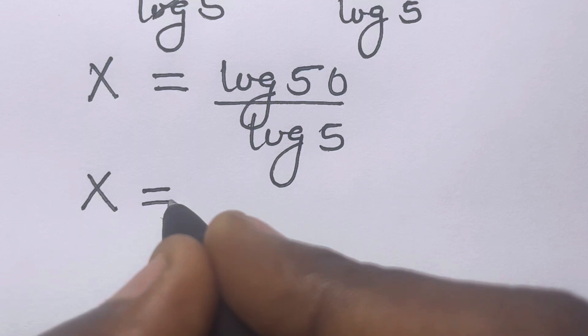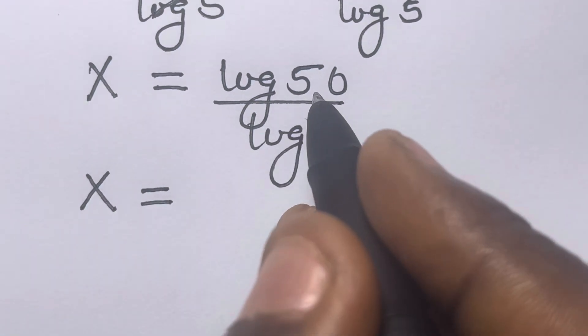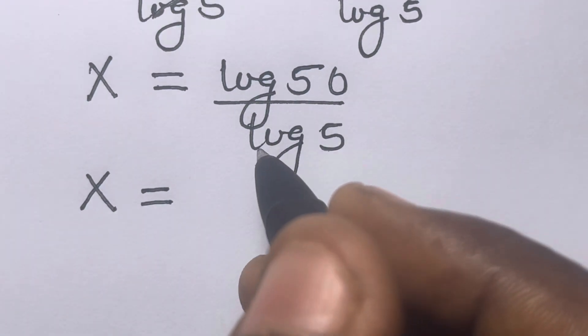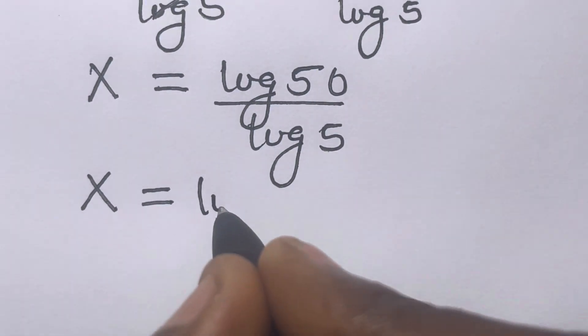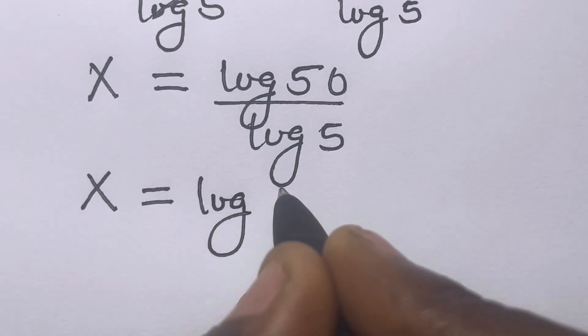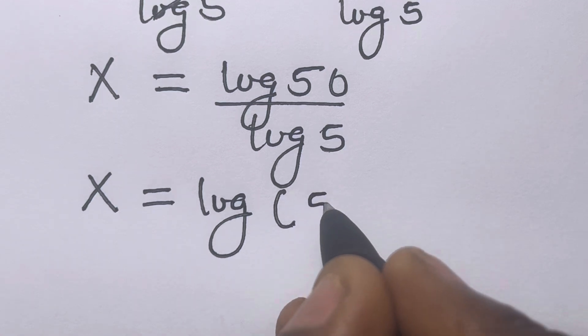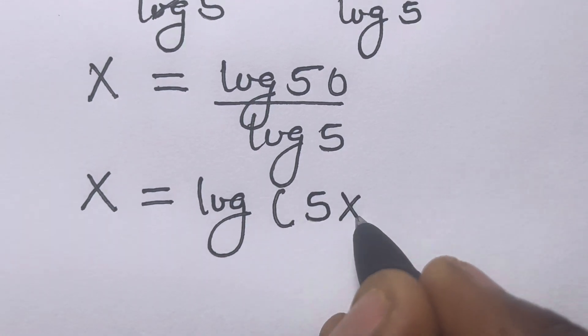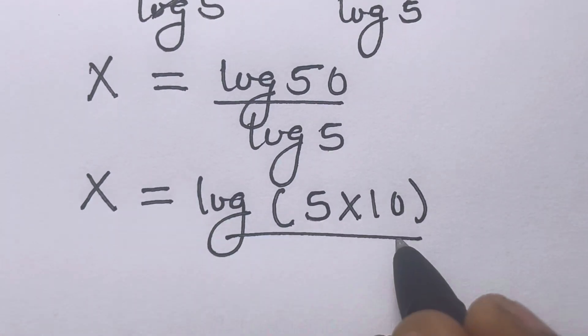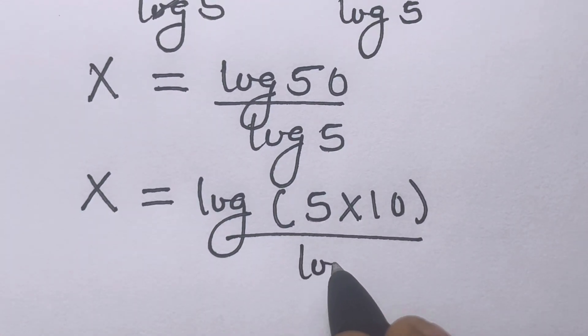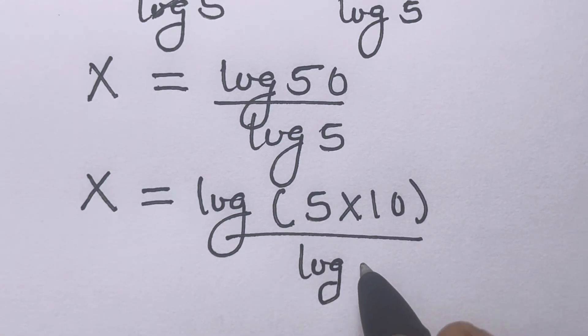We will have x equals — let's express 50 as the product of 5 and 10. We have log of 5 times 10, divided by log 5.